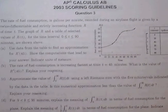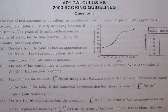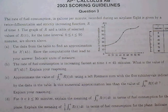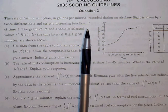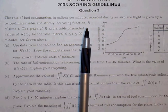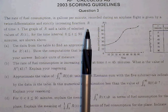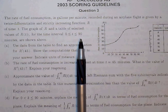We're continuing with free response questions from the 2003 AP exam, number 3. The rate of fuel consumption in gallons per minute recorded during an airplane flight is given by the twice differentiable and strictly increasing function R of time T. The graph of R and the table of selected values of R of T for the time interval between 0 and 90 minutes are shown.